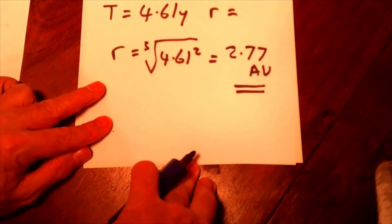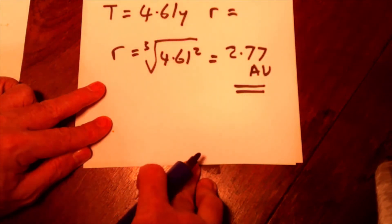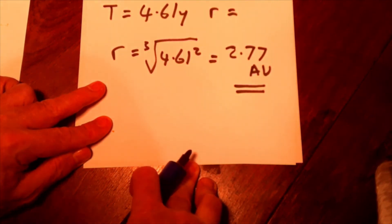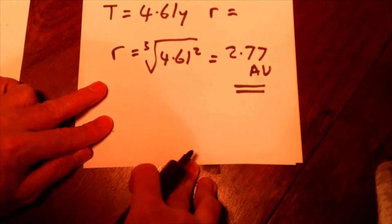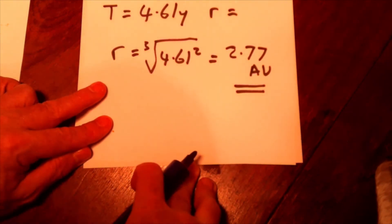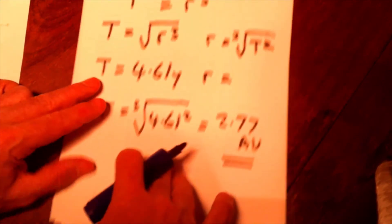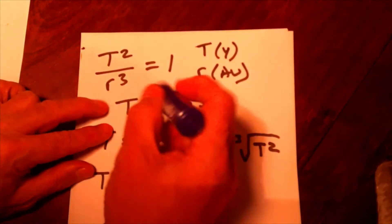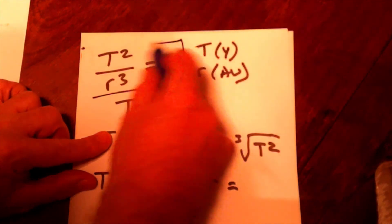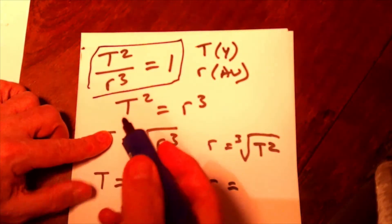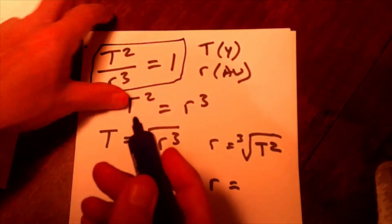And that will be the average radius of its orbit. And this object appears to be something between Mars and Jupiter. And I reckon it's probably an asteroid. In fact, I know it is. It's Ceres. So, in our solar system going around our sun, T squared over R cubed equals 1, a piece of cake.